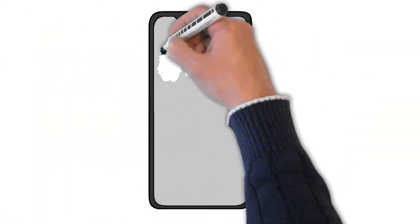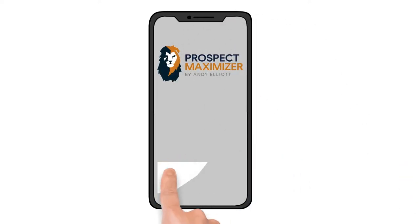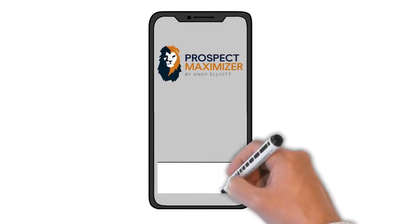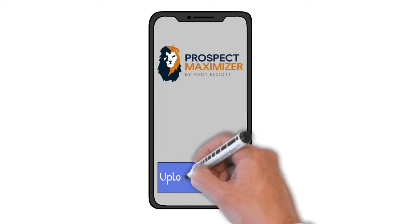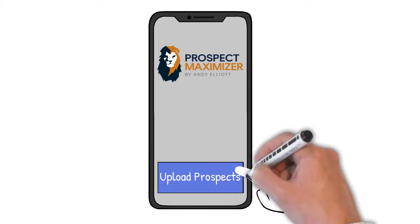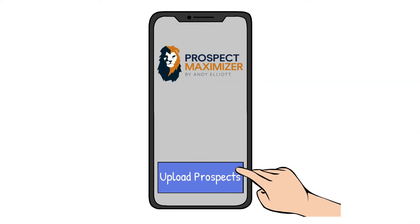Imagine this. What if there was an easy-to-use app that acted as your personal assistant to help with all the follow-ups, and all you needed to do was add your prospects to it? Thanks to the latest advances in technology and the world's best auto sales trainer, Andy Elliott, it does exist.